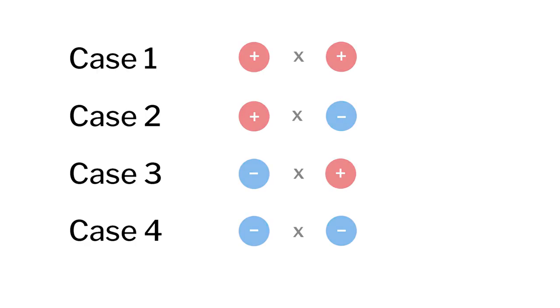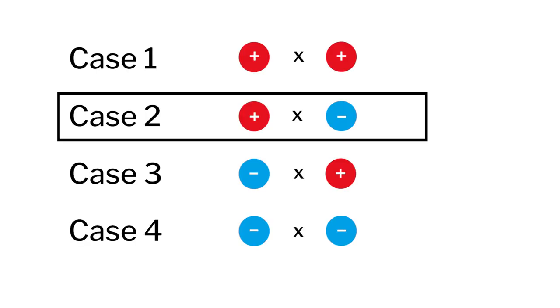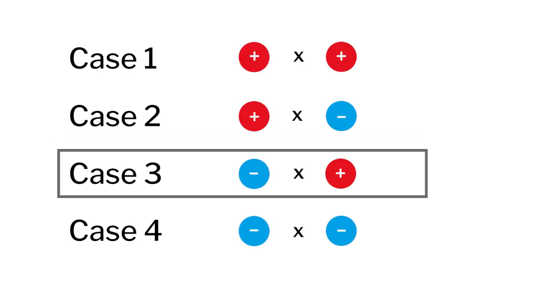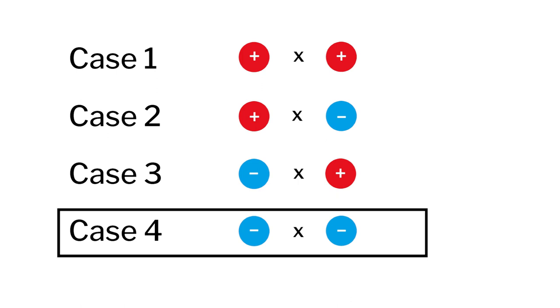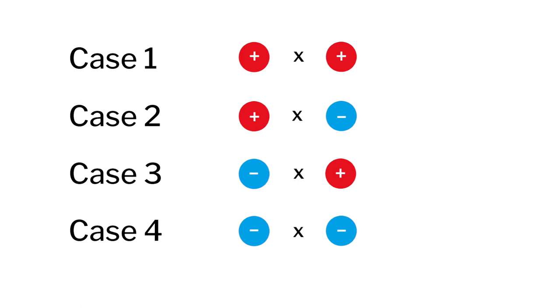Once it is understood how to represent integers, let us go ahead with multiplication of integers. When we multiply two integers, we get four cases: positive into positive, positive into negative, negative into positive, and negative into negative. Let us explore these four cases through activities.